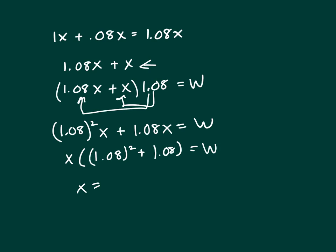And then divide both sides by this factor. And it gives you W over 1.08 squared plus 1.08.